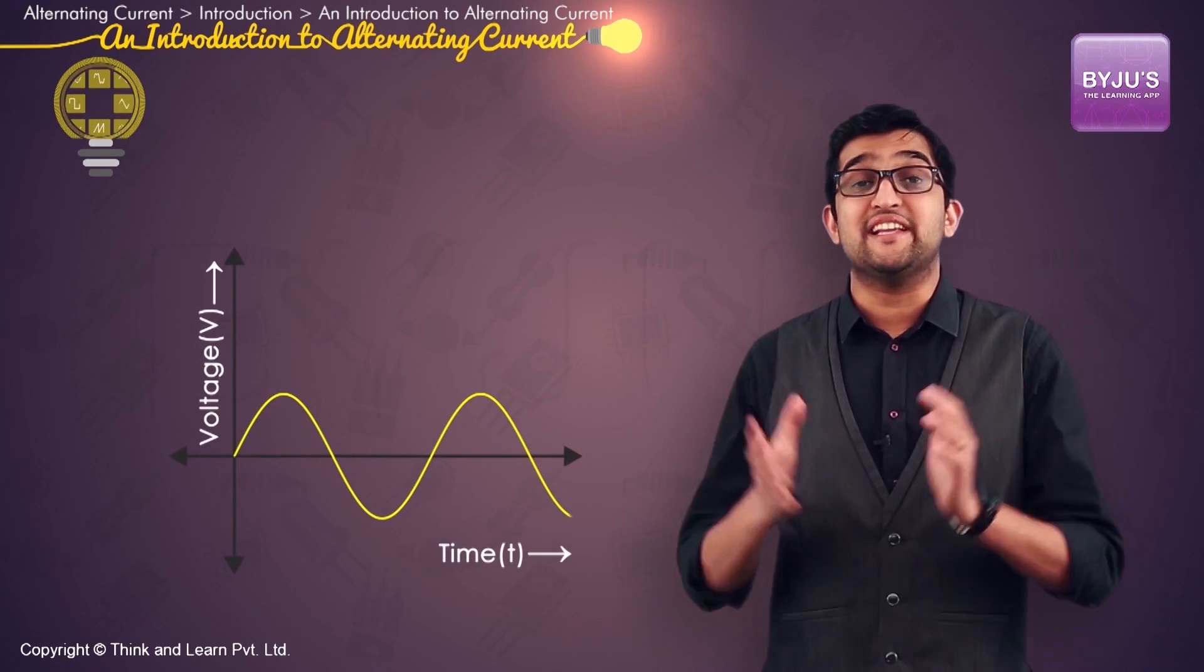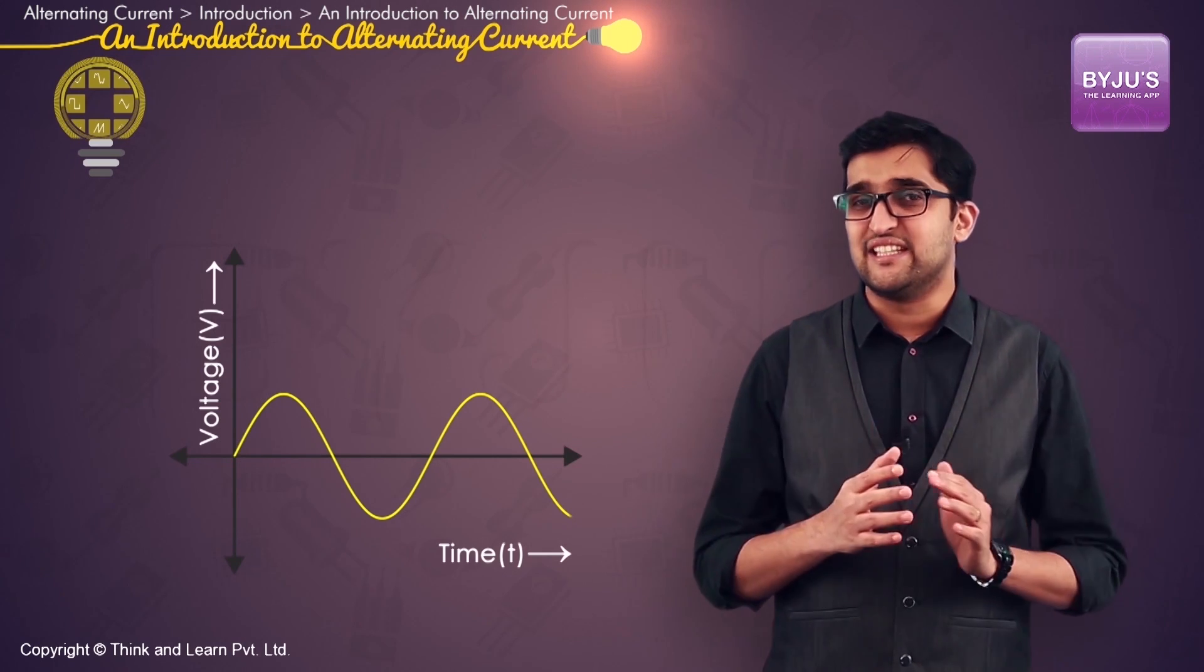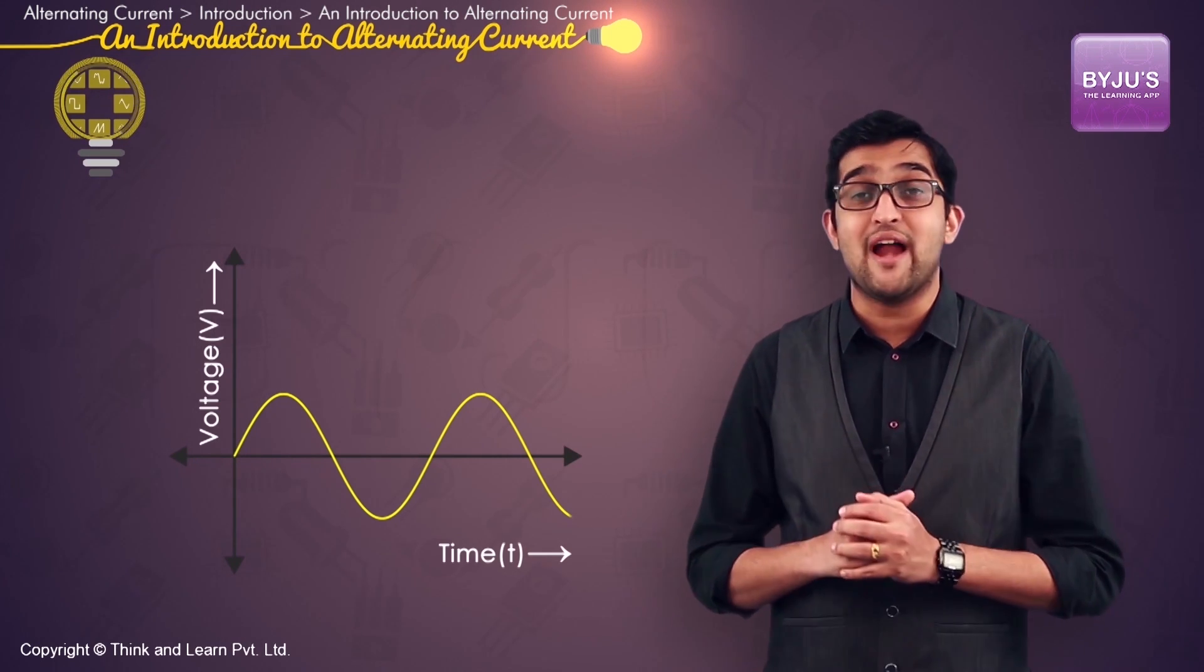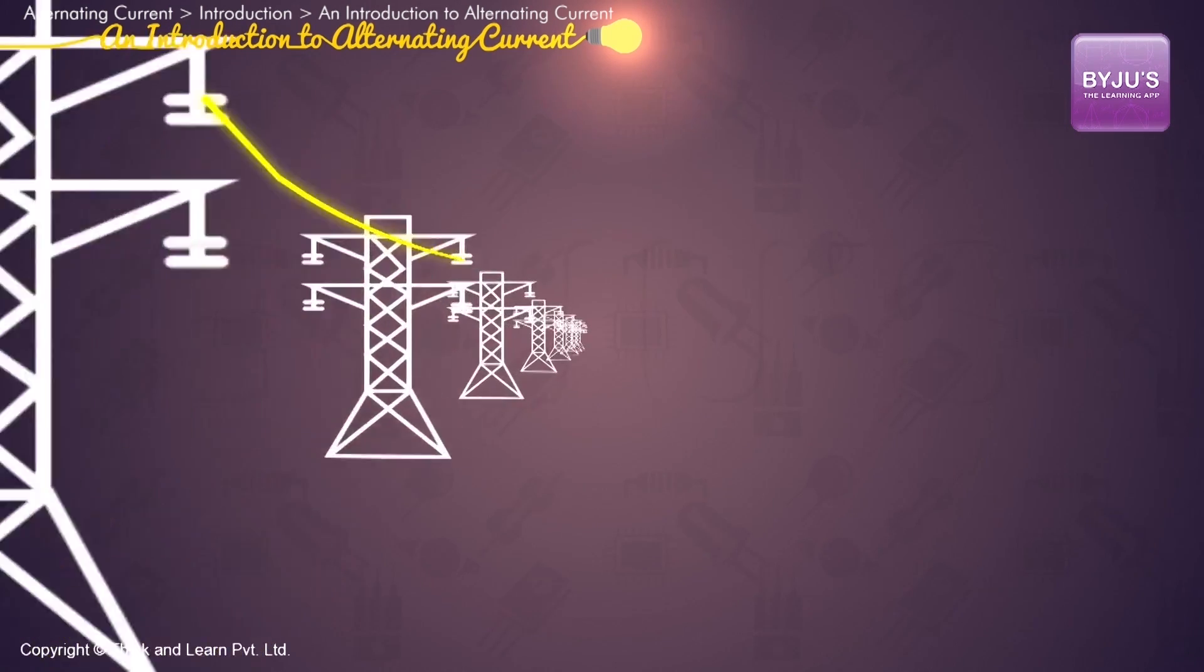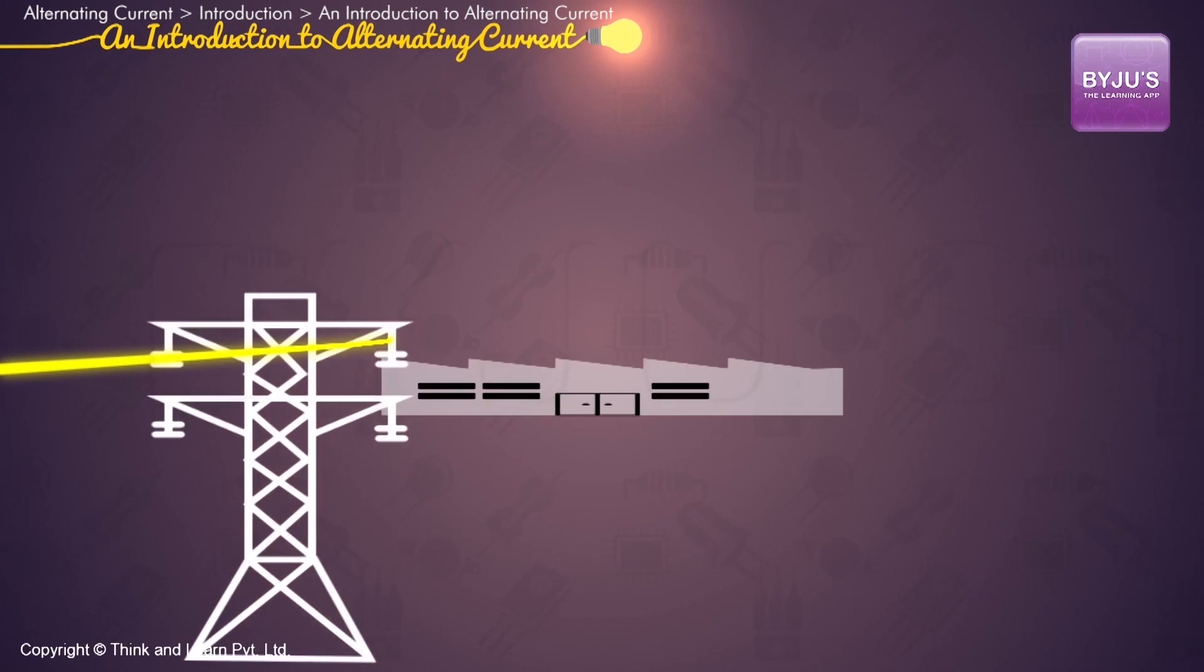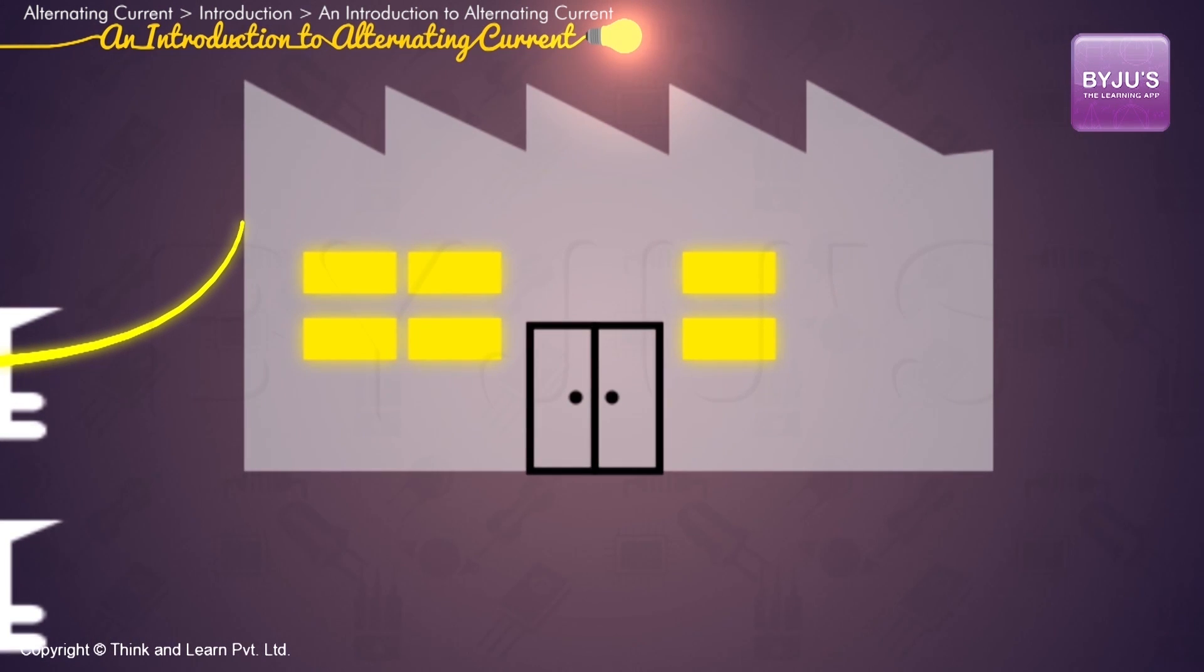But among these alternating currents, the sinusoidal AC is the most important one as far as we are concerned. The reason being that in India it is the sinusoidal AC which we get in our homes through the electricity distribution systems.